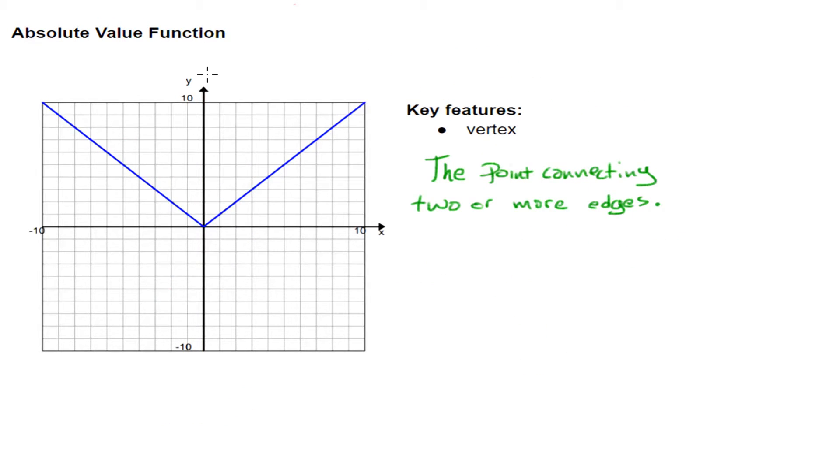In the last section, we actually talked about a vertex very quickly. But the definition of a vertex would be the point connecting two or more edges. Here, it's pretty clear that we have one nice distinct edge right here and another distinct edge right here. What makes them distinct is they have different slopes, different properties. The point that's connecting them is just going to be this spot right there. So, for an absolute value function, my vertex would equal (0, 0).